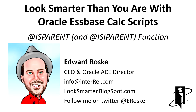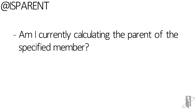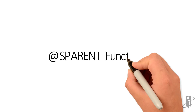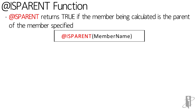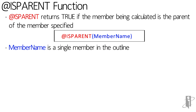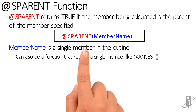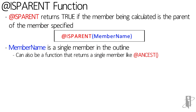Welcome to the isParent function and its close personal friend, the isIParent function. isParent answers the question: is the member I'm currently calculating the parent of the specified member? The syntax for isParent is just @isParent and then a single member name. It will return true if it's currently calculating the parent of that member name. It can either be a single member in the outline or it can be a function that returns a single member.